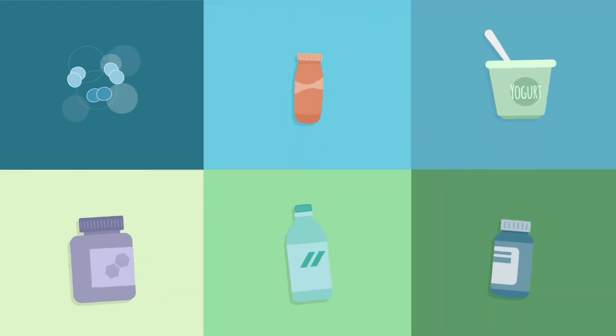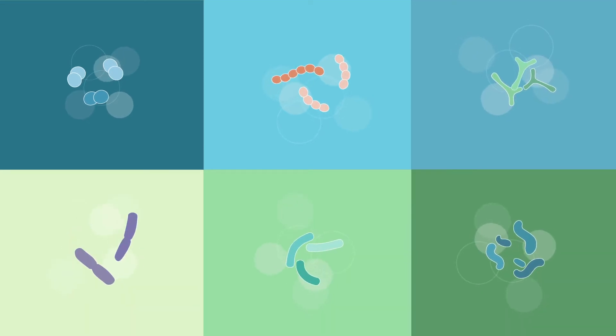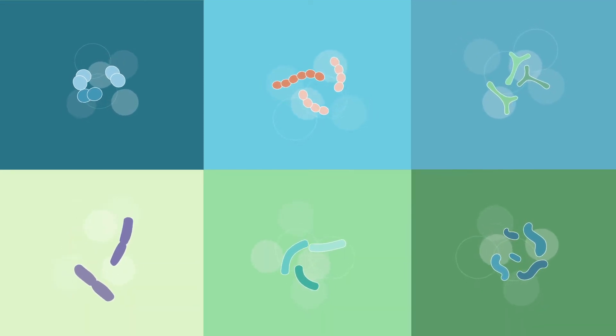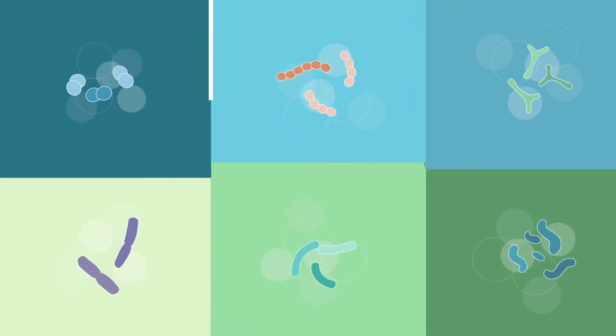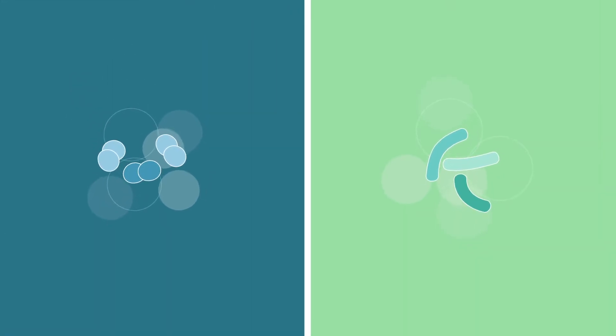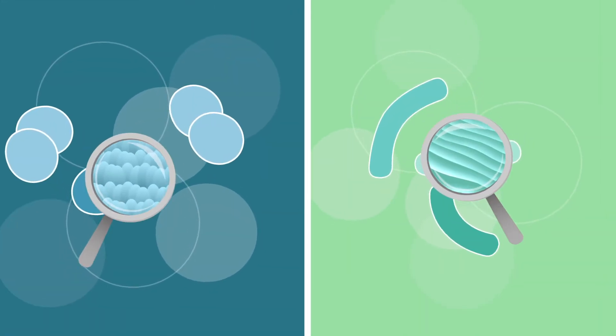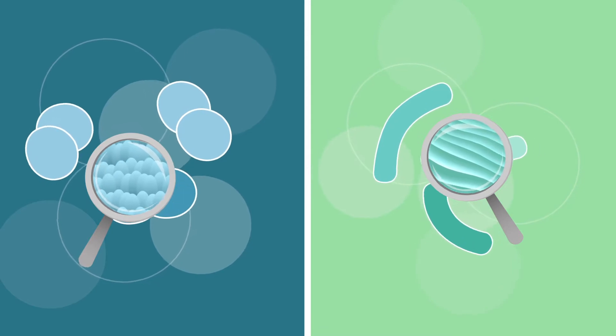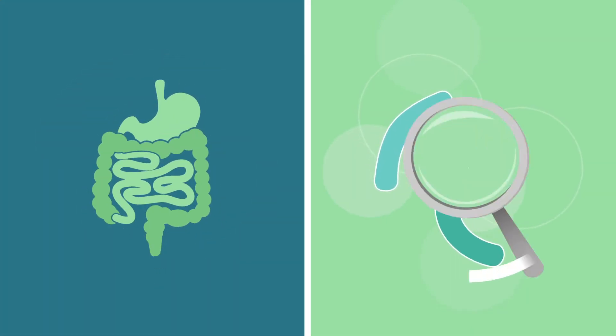Different products contain different probiotic microbes, which have specific characteristics and health benefits. One key way probiotics differ from each other is that their outsides are different. This prompts distinct responses from our digestive and immune systems.